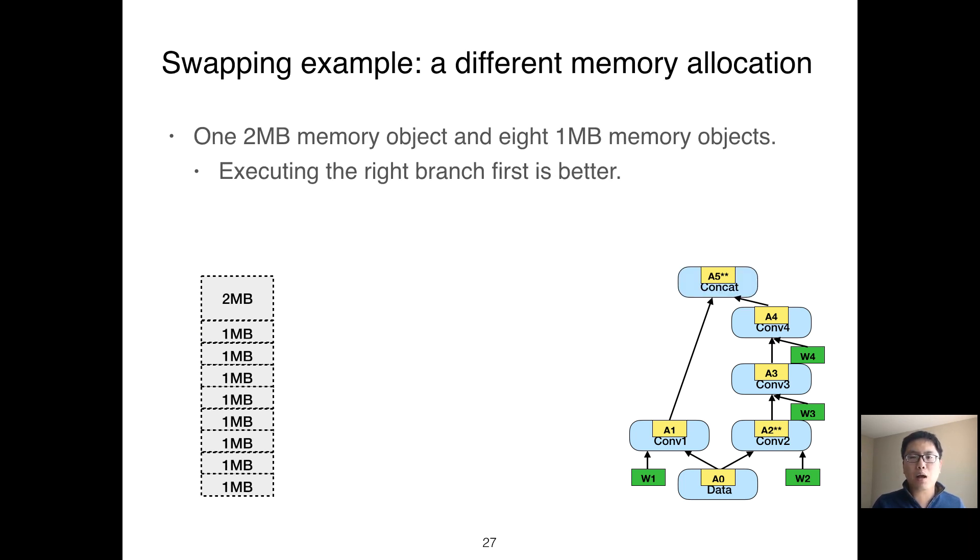What if we use a different memory allocation? What if we allocate only one 2MB memory object and eight 1MB memory objects? Surprisingly, scheduling the right branch first now achieves better swapping performance, which is contrary to the previous example. The main reason is that there is only one 2MB memory object, and both A2 and A5 are 2MB. So we need to reuse the 2MB memory object, and scheduling the right branch first can swap out A2 earlier and therefore can overlap the swapping communication. This example shows that both scheduling and memory allocation affect swapping performance.